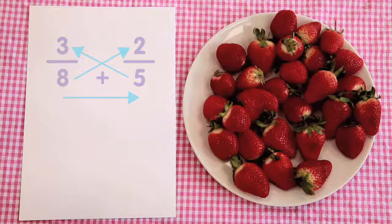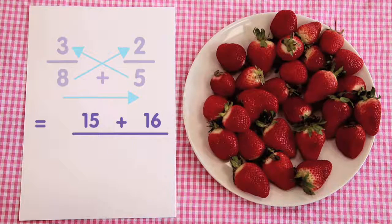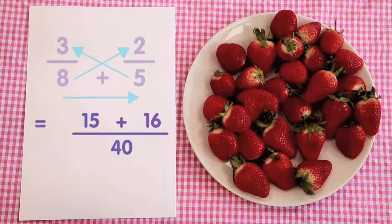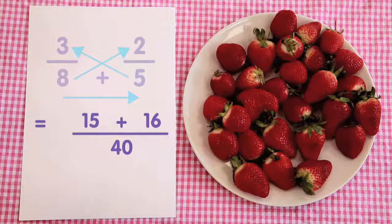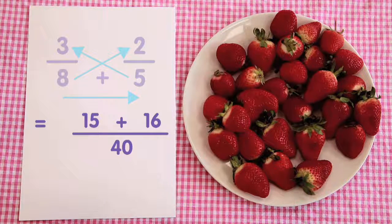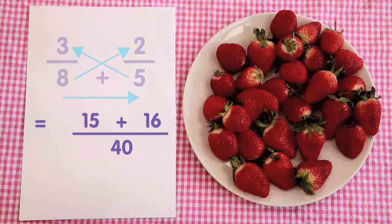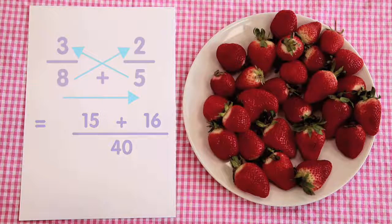Because this is an addition, we separate the fifteen and sixteen with an addition symbol. Add fifteen and sixteen together and this equals thirty-one. So our final fraction is thirty-one over forty.